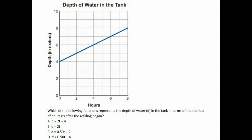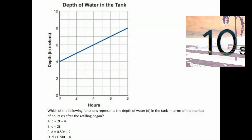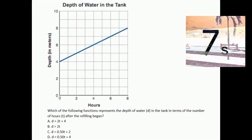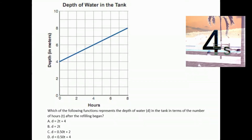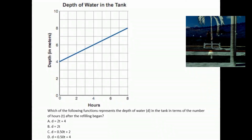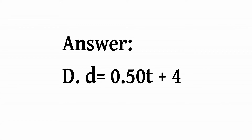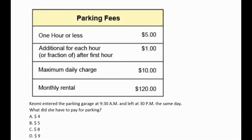Which of the following functions represents the depth of water d in the tank in terms of the number of hours t after refilling began? Is it A: d equals 2t plus 4, B: d equals 2t, C: d equals 0.50t plus 2, or D: d equals 0.50t plus 4? The answer is letter D: d equals 0.50t plus 4.